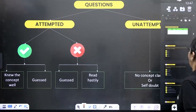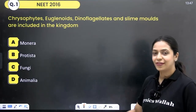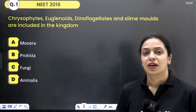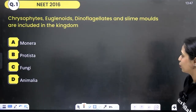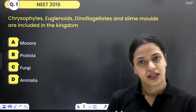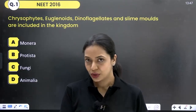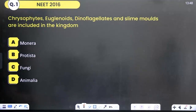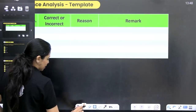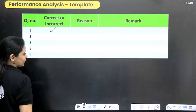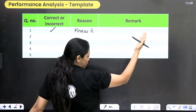Let's see some questions and I'll show you how to fill up the table, one question at a time. I've taken five PYQ questions from biological classification. Here's the first question: Chrysophytes, euglenoids, dinoflagellates, and slime molds are included in which kingdom? The options are Monera, Protista, Fungi, and Animalia. Most of you will know the answer — you know the concept, you remember this. So if you answer Protista, you go to your table and mark: Question 1, correct. Reason? I knew it. Remark? I know the concept. Good job.